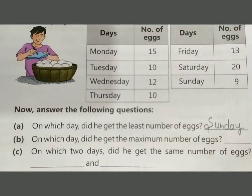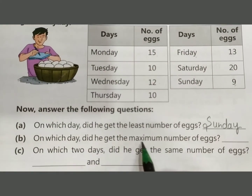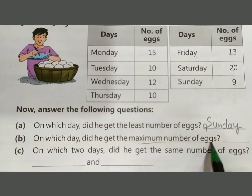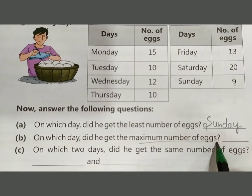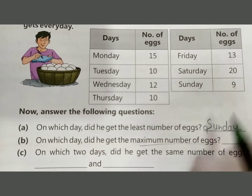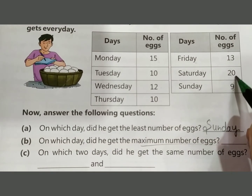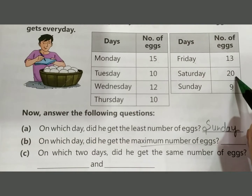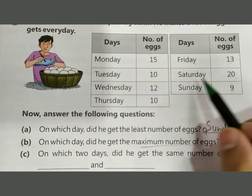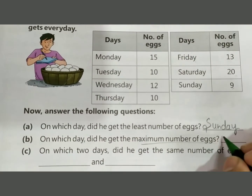On which day did he get the maximum number of eggs? The maximum number is 20. That day is Saturday. Write Saturday.